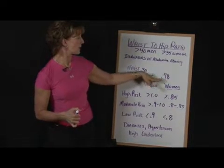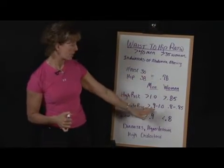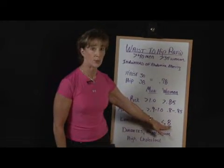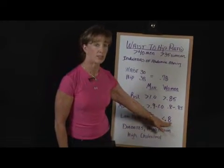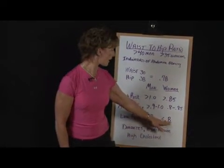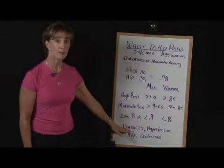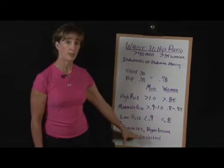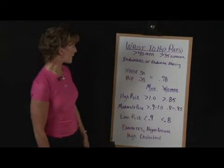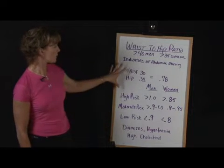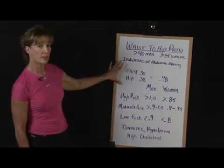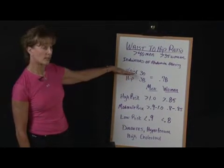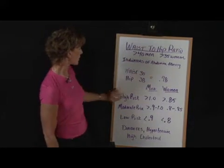This was a woman. So 0.78 — if I look at my chart — puts this individual in a low risk category for developing diabetes, hypertension, high cholesterol, and type 2 diabetes. So when you do your calculations, again divide your waist by your hip and come up with a ratio.